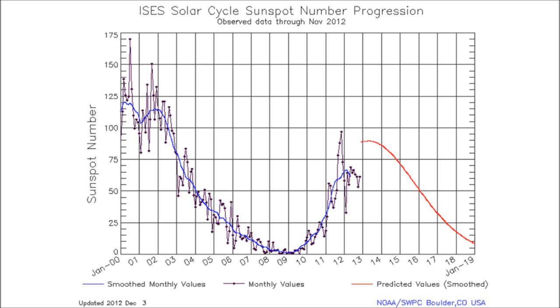Of course, the tilting of the Earth on its axis affects propagation too, as well as the time of day. As a very general rule of thumb, frequencies above 10 MHz are useful during the day and below that are good at night. Predicting the actual usable frequency is an art and a science, and depends on many factors.